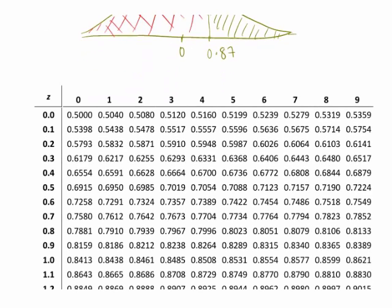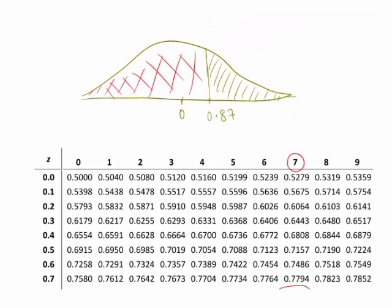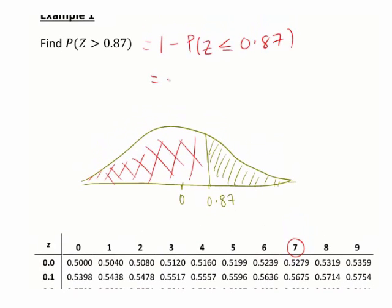We look up the table to find the area under the curve to the left of 0.87. Remember the integer part and first decimal place are shown in the row, and the second decimal place is shown across the top. So 0.87 gives us 0.8079 from the table — that is, the probability of z being less than or equal to 0.87 is 0.8079. Therefore the probability of z being greater than 0.87 is 1 minus 0.8079, giving a probability of 0.1921.